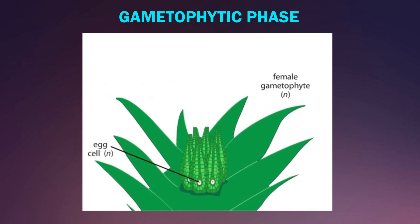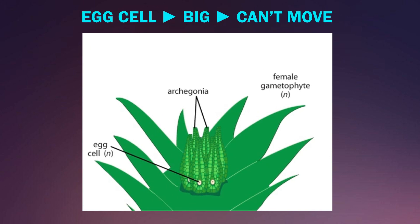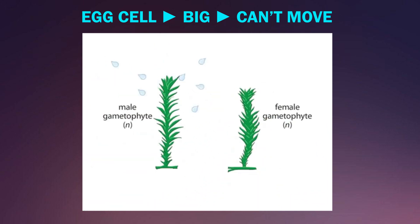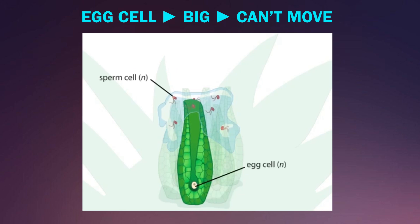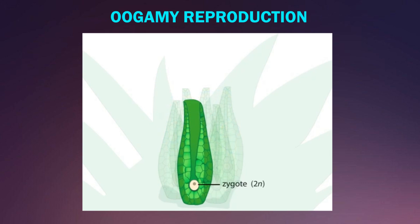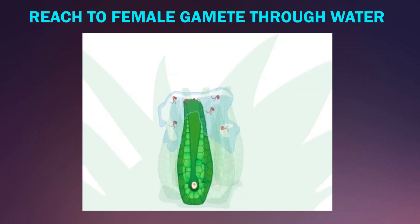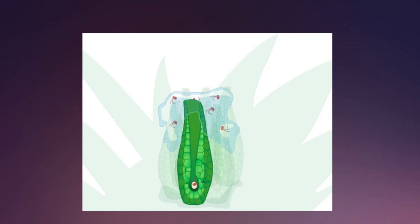The female sex organ is archegonium, which contains an egg. The female gamete or egg cell in bryophytes is big and does not move. For reproduction to take place, male gametes have to reach the egg cell and fuse with it. Male gametes reach the female gamete through water, and thus water is an essential part of bryophyte reproduction. Once gametes fuse with each other, a zygote is formed.